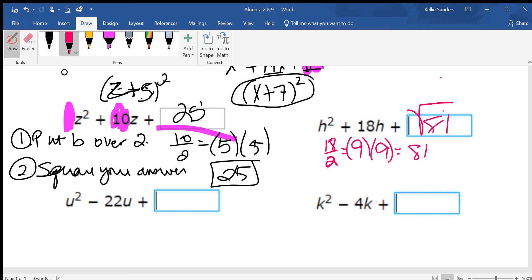Basically, the square root of 81 is 9. And 18 divided by 2 is 9. So that would be your perfect square. But 81 is your answer.